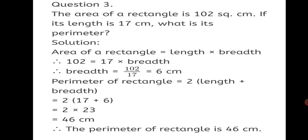Question 3: The area of a rectangle is 102 square centimeters. If its length is 17 centimeters, what is its perimeter? To find the perimeter of the rectangle, we will first have to find its breadth. Area is already given and length is given, so we can find the breadth using the formula: area of rectangle equals length into breadth. Substituting: 102 equals 17 into breadth. So breadth equals 102 divided by 17, which equals 6 centimeters.